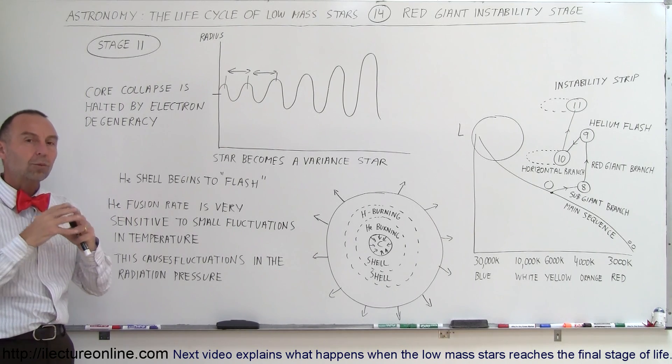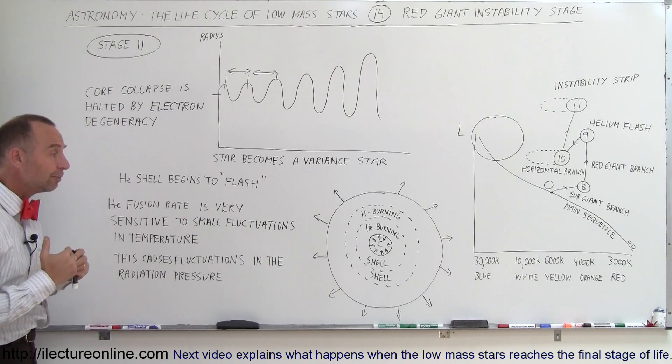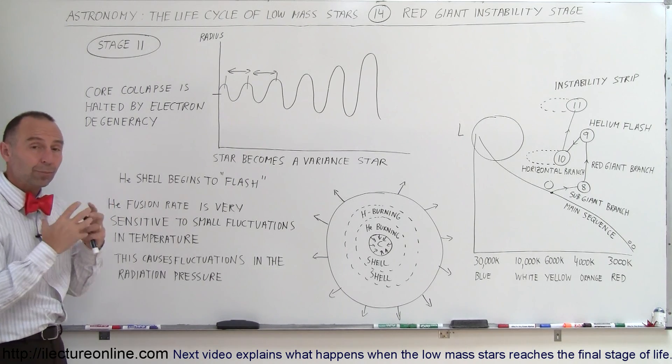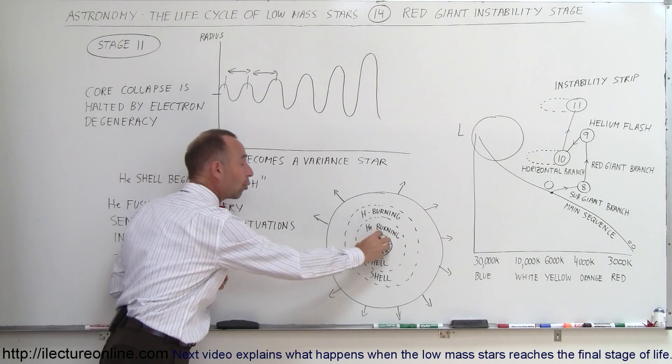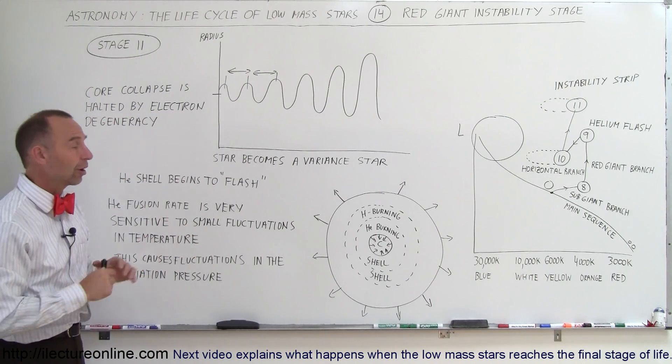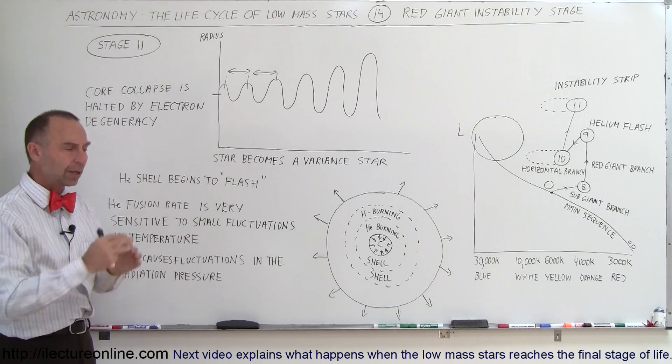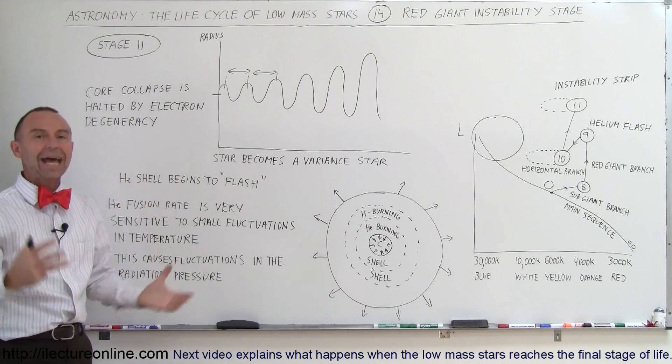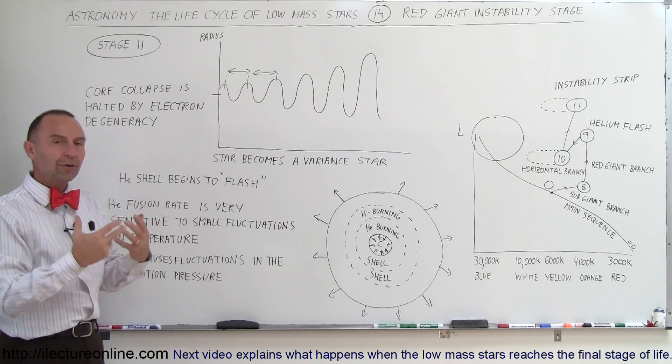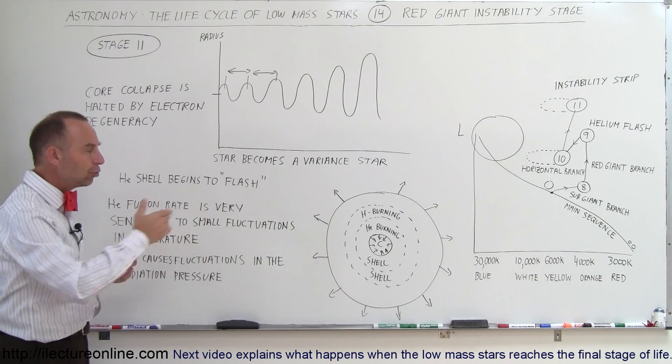The core temperature will remain below 600 million Kelvin. Therefore, that is pretty well the end stage of the core of the vast majority of stars. They will fill up with carbon.